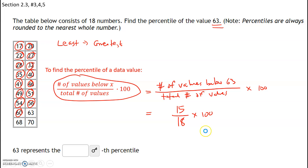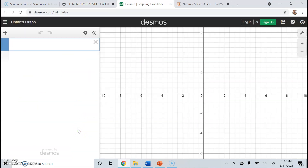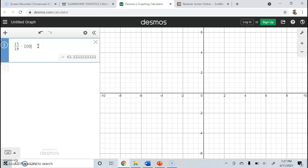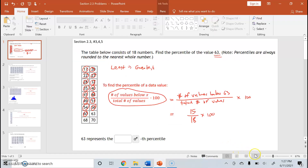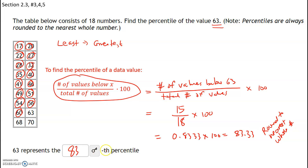You can use your own calculator if you'd like. There's also a good calculator on the calculators page — Desmos calculator at desmos.com. So I'm going to take 15 divided by 18, that's 0.8333, multiply by 100, and we get 83.33%. Percentiles are always rounded to the nearest whole number, so we round to 83. So 63 represents the 83rd percentile.